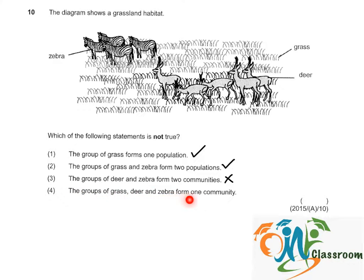Option 4: the groups of grass, deer, and zebra form one community. A community is made up of several different populations living together in a habitat. So if we see this as a habitat, the groups of zebra, deer, and grass form one community — so option 4 is correct. The answer is option 3.